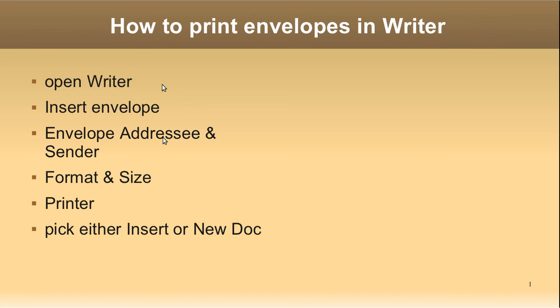Obviously you've got to open up Writer first, and then you select Insert Envelope. There are three tabs that pop up in a window and you have to do all three of them. You're going to do the Addressee and Sender, Format and Size — and this is the one that threw me. You've got to pick Printer.